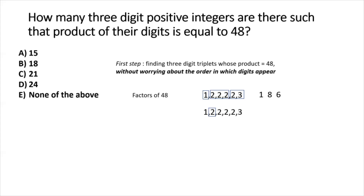If 2 is one digit, we can take two more 2s (product 4) and then 2 and 3 give product 6, yielding the triplet {2, 4, 6}. Alternatively, with 2 as one digit, we take three 2s (product 8) and are left with 3, giving the triplet {2, 8, 3}. Both are valid triplets whose product equals 48.